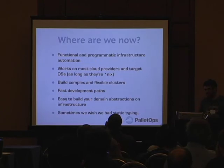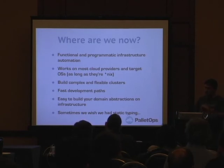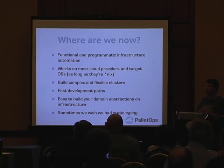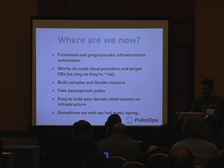We now have a functional infrastructure automation platform that works on most cloud environments, straight hardware, and virtual machines. We're building complex and flexible clusters — things that are very dynamic in nature. It's easy to build abstractions on top of it and we have a lot of users doing that. As a final note, sometimes we wish we had static typing. Using Clojure with no static typing is a lot of fun until it stops being fun, and then it's like: I wish we had typing.